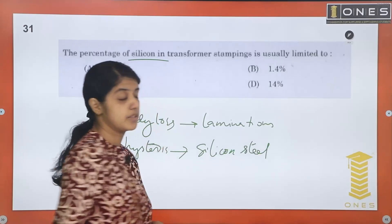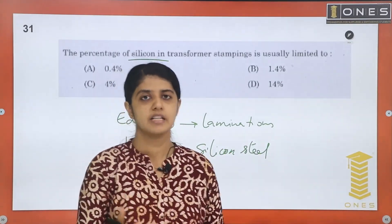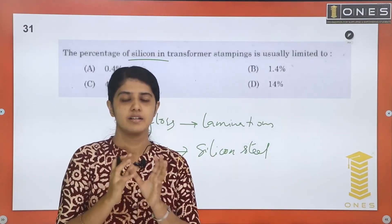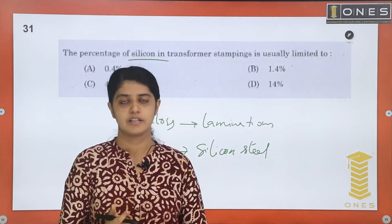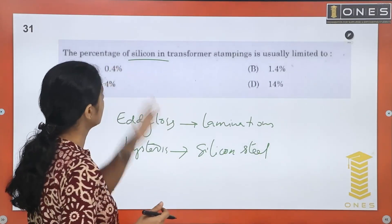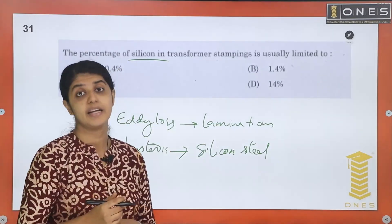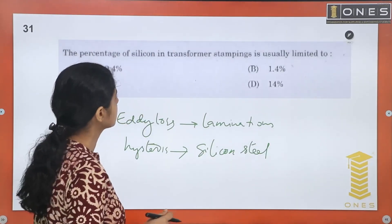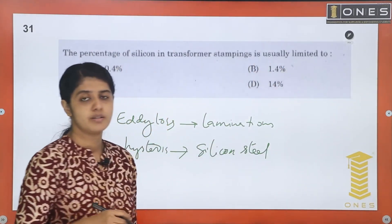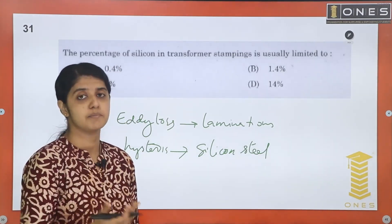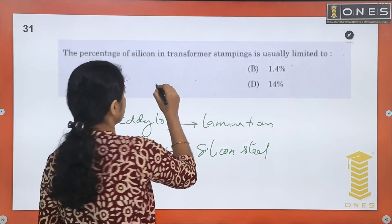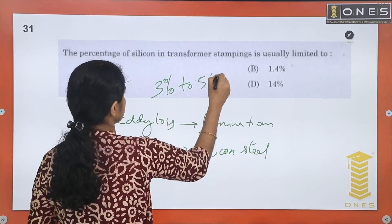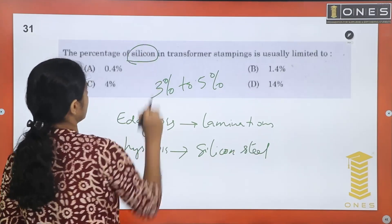We use silicon steel as the core material. If we add a certain percentage of silicon, it improves the material properties. The percentage of silicon in transformer stampings is usually limited — the range is typically 3 to 5 percent of silicon.